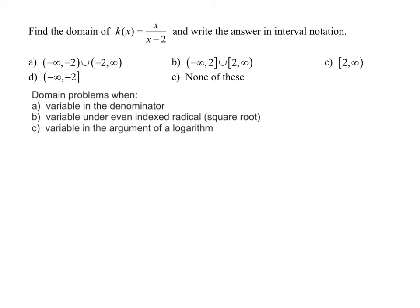So our domain is going to be all real numbers except the numbers that make the denominator equal to zero. So except when x minus two equals zero. Let's solve this by adding two to both sides. So it's all real numbers except two.